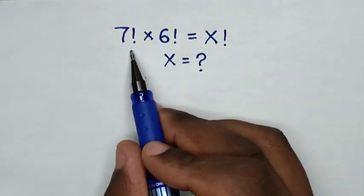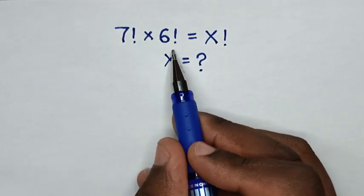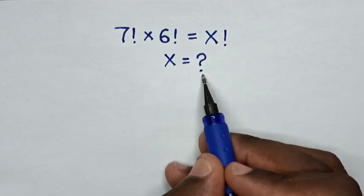Hello! How to solve 7 factorial times 6 factorial is equal to x factorial, to find the value of x.